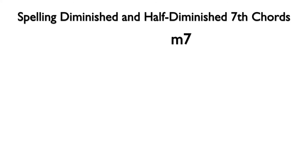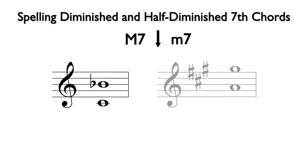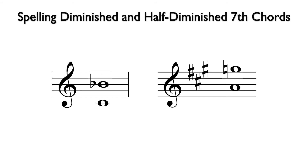To find a minor 7th, we simply lower a major 7th by a half-step. So B becomes B flat in the first example, and G sharp becomes G in the second example. To find a diminished 7th, we lower a minor 7th by a half-step. So B flat becomes B double flat in the first example, and G becomes G flat in the second example.